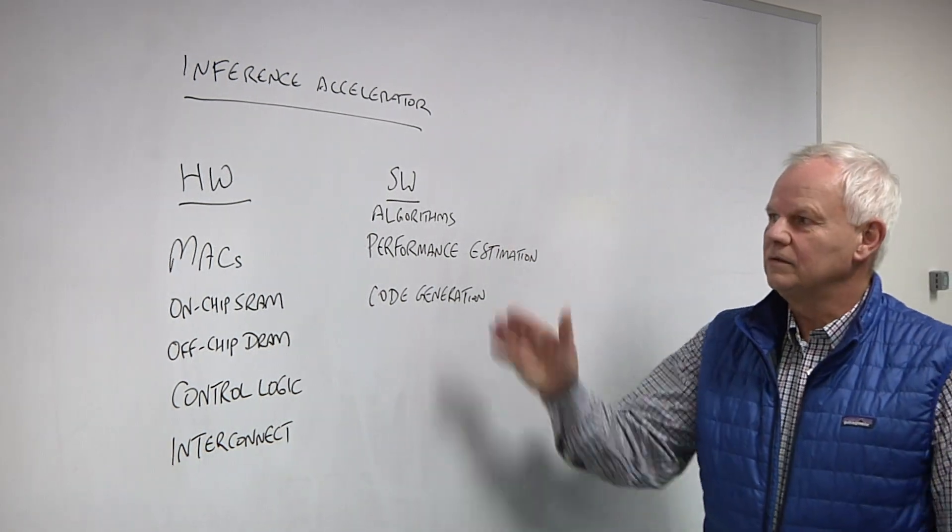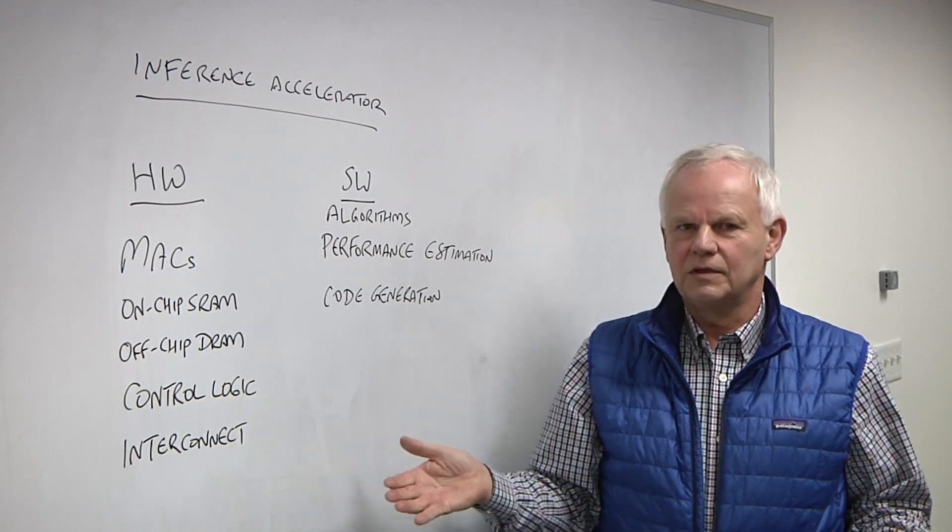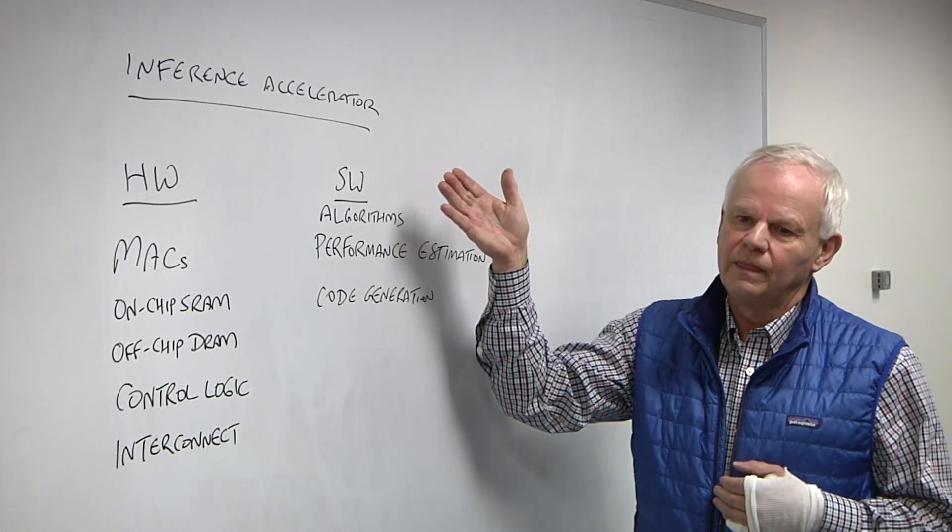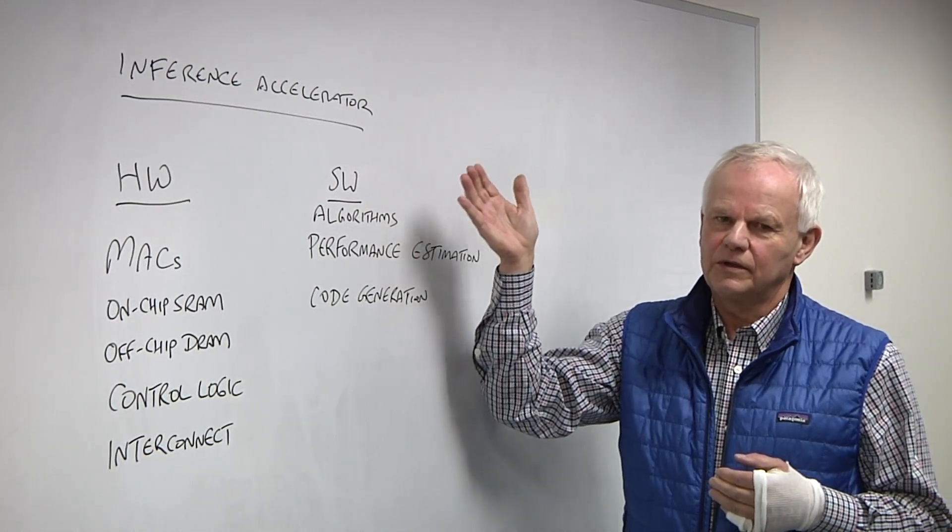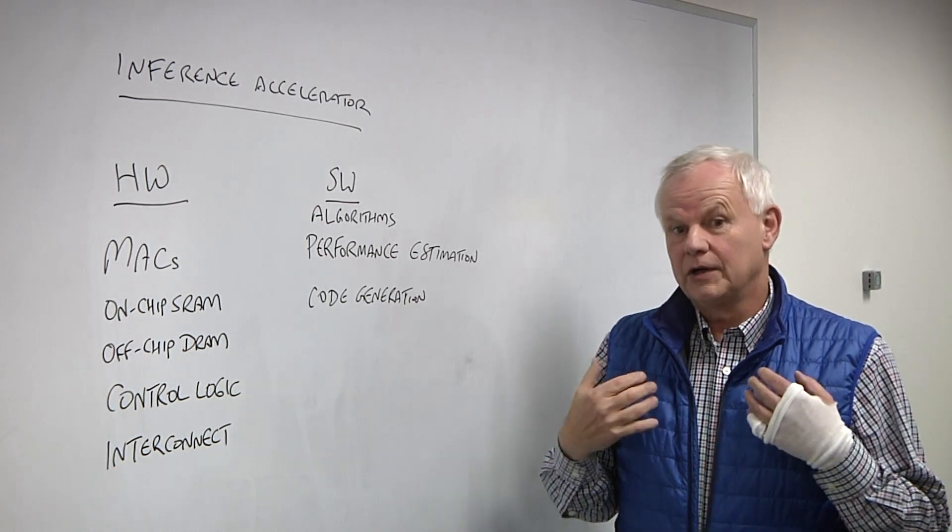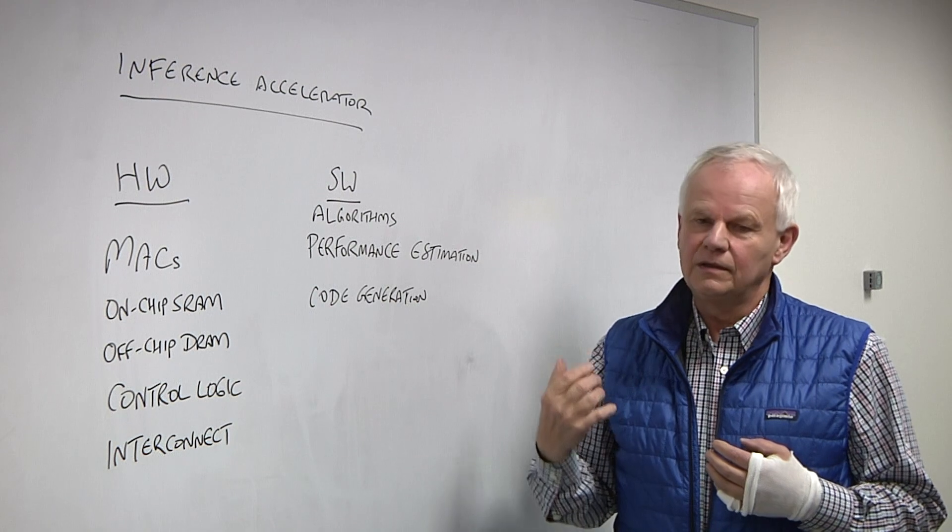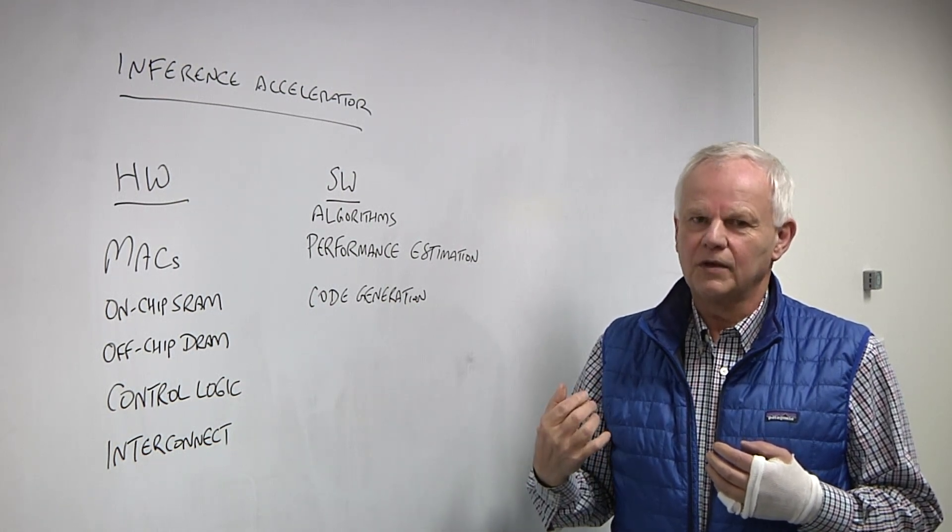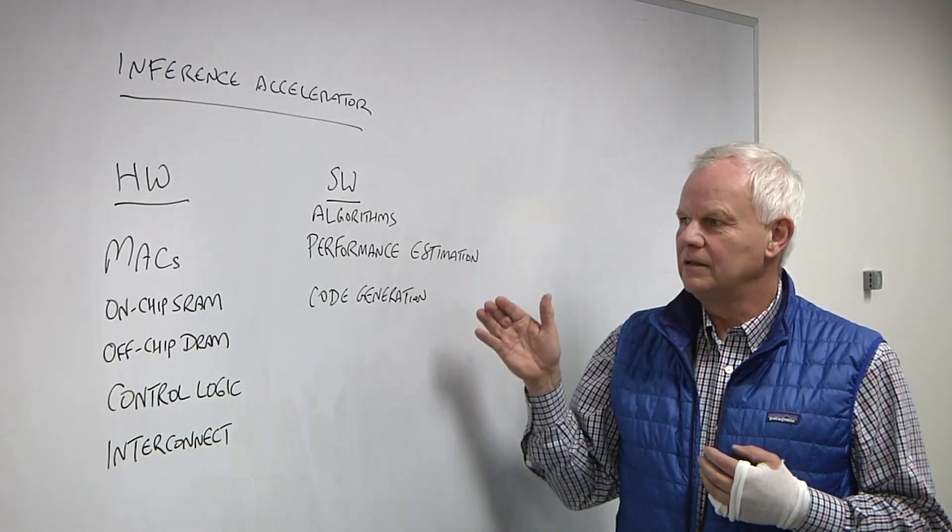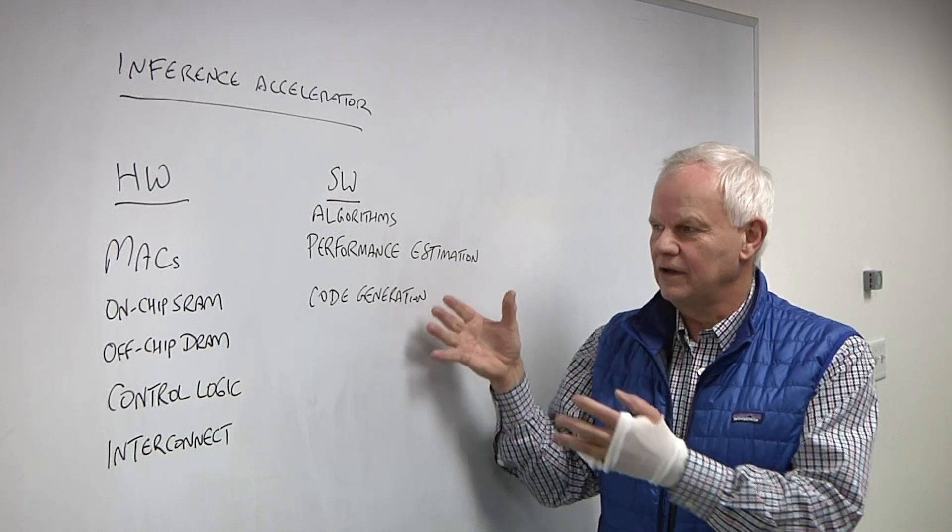Without software, all these things would do nothing. You need software for any programmable chip in order to run. And the input to the software, at least for our chips and what customers have, is neural network models. In our particular case, we take neural network models for integer 8 or BFLOAT16 in ONIX or TensorFlow Lite. And then our software processes them.